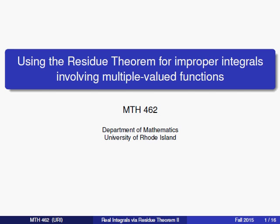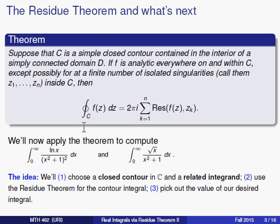We're going to specifically take a look at the problem of finding the integral from 0 to infinity of the square root of x over x squared plus 1. We're going to use a lot of the same ideas we saw in our previous video of the integral of natural log of x over x squared plus 1 squared.